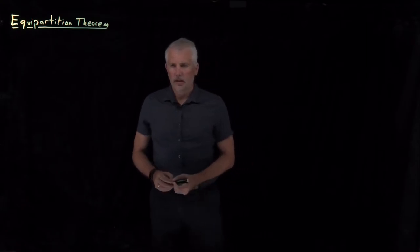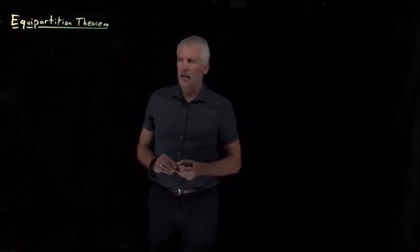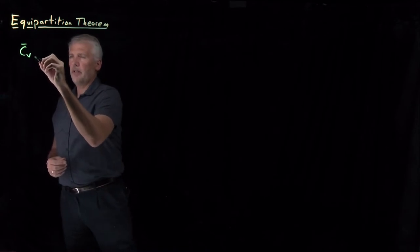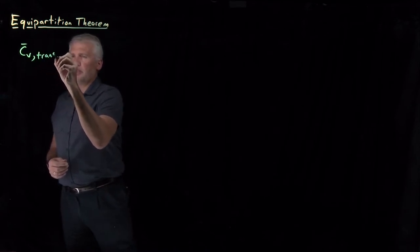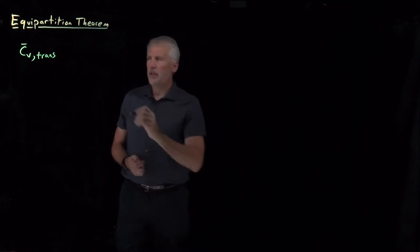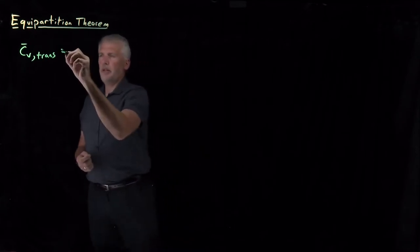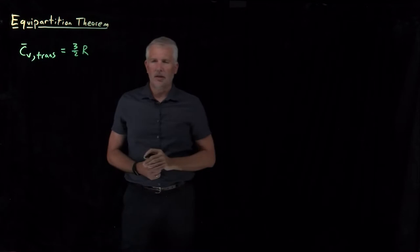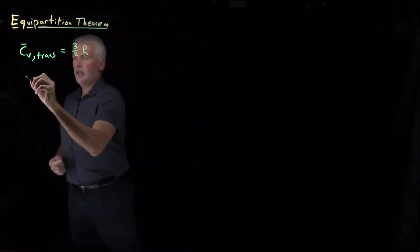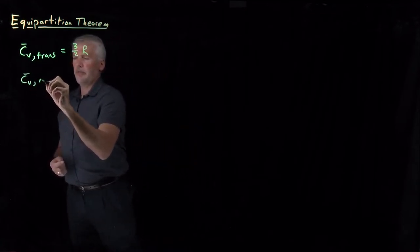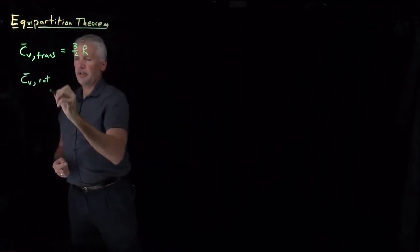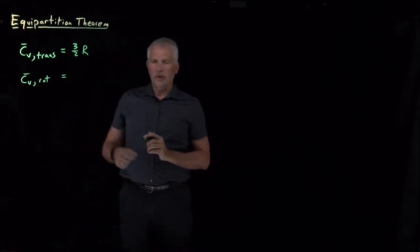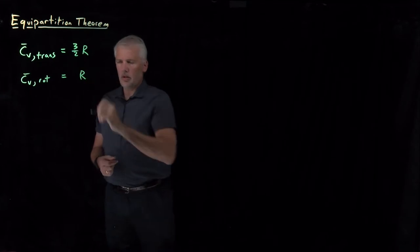At this point, we've seen what the heat capacities look like: the constant volume molar heat capacity due to translational motion, which we obtained from the 3D particle in a box model, worked out to be three-halves R. We've also seen the constant volume molar heat capacity for rotation of a diatomic molecule examined with the rigid rotor model, which worked out to be R.